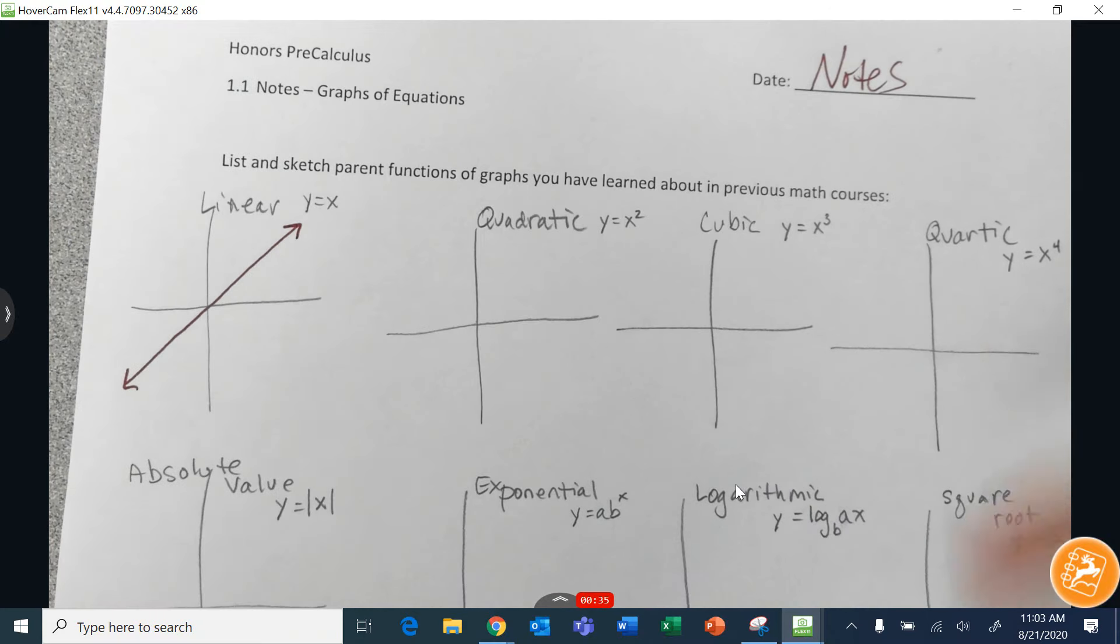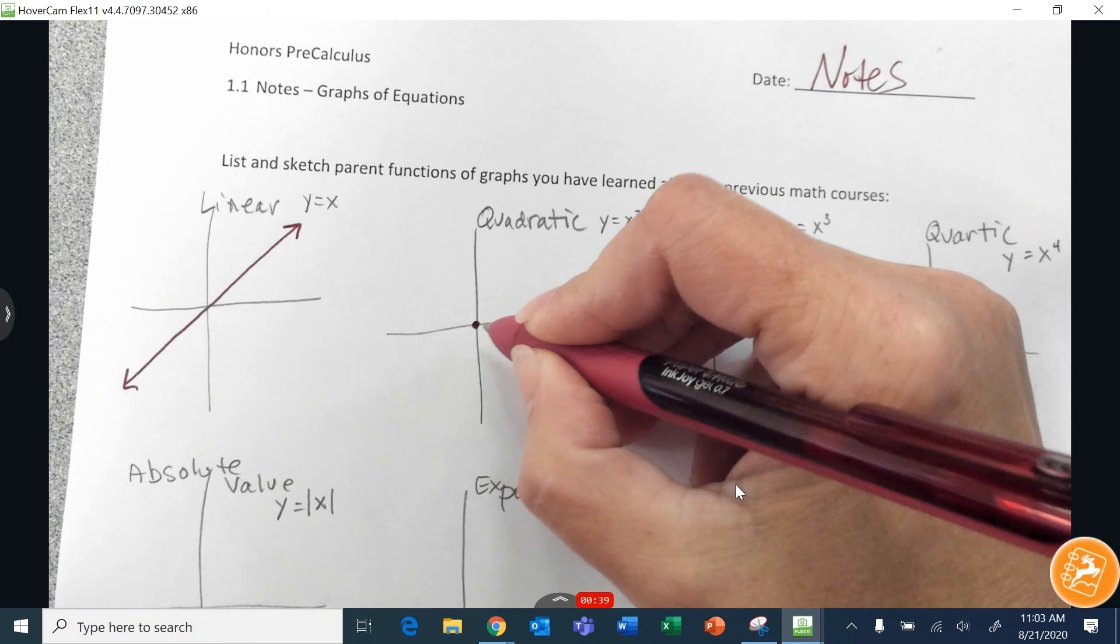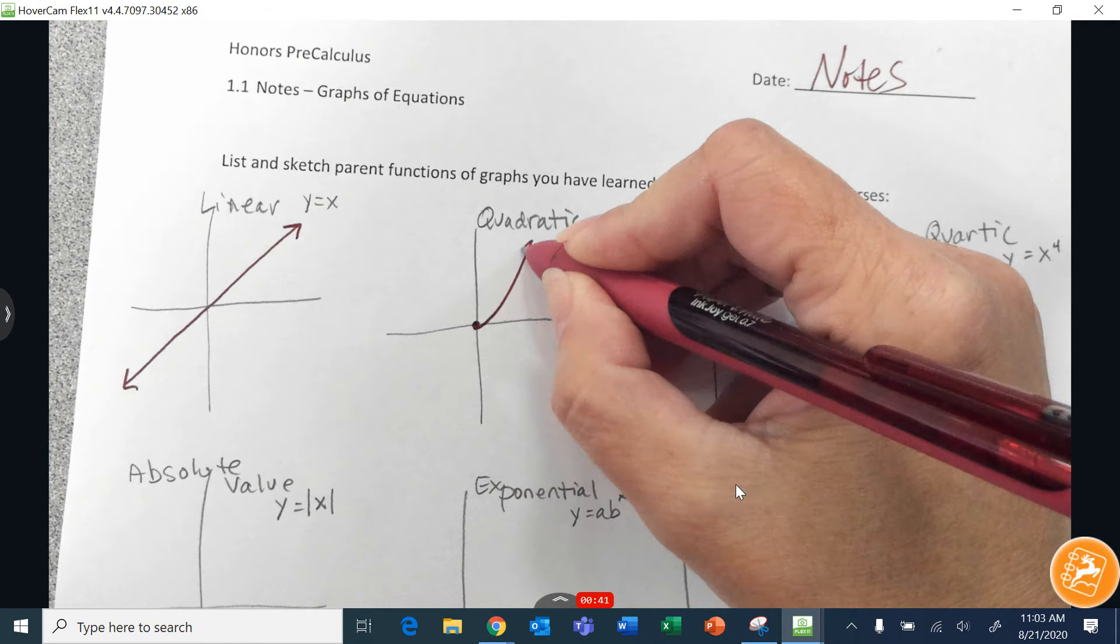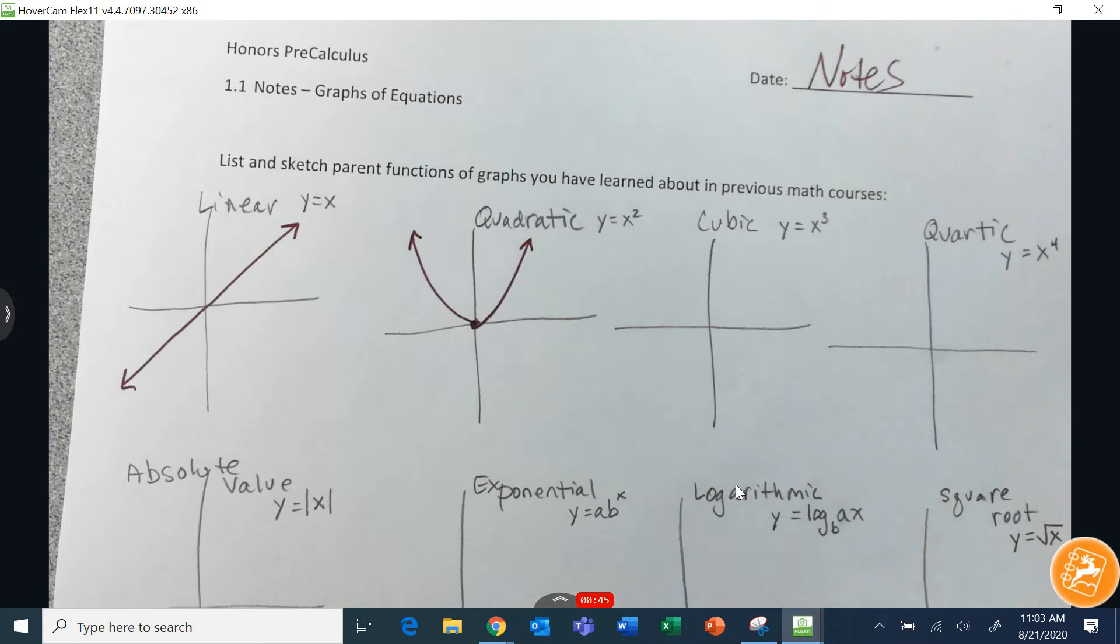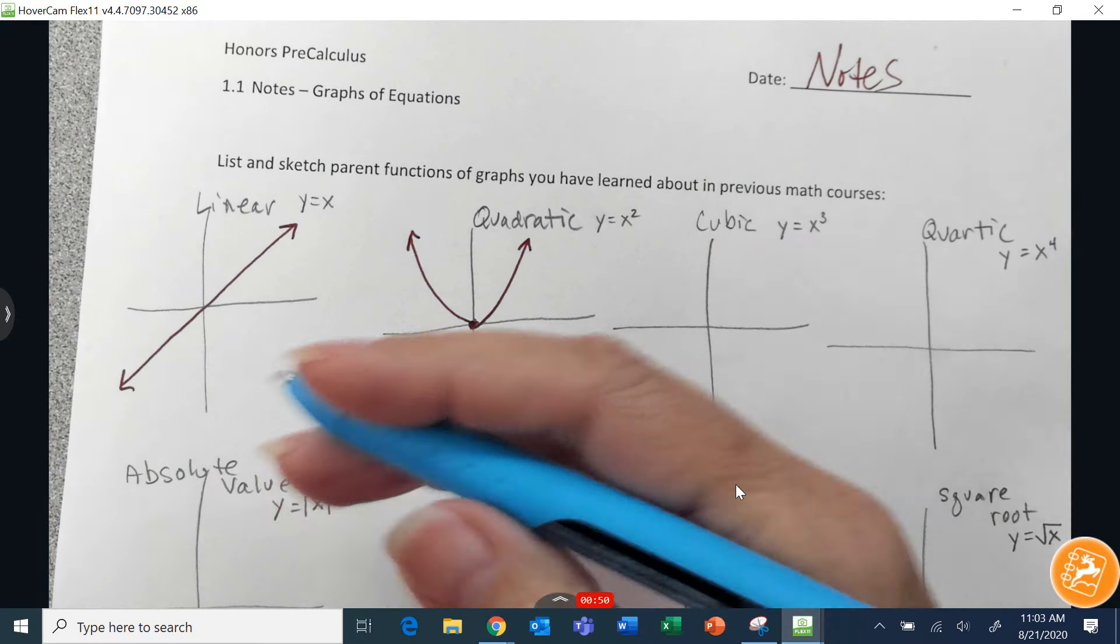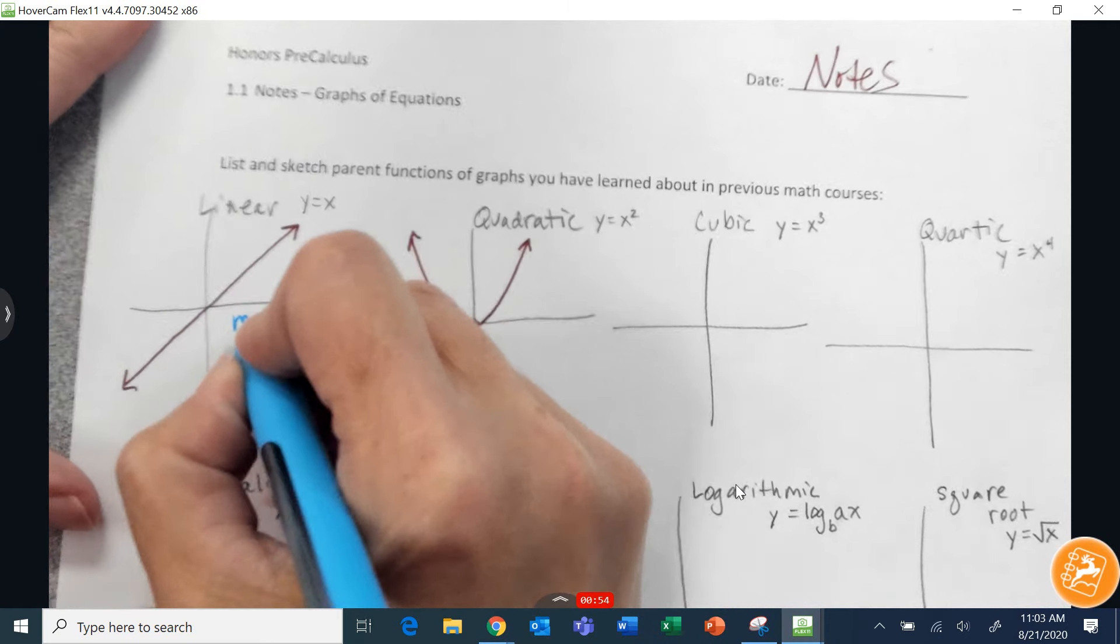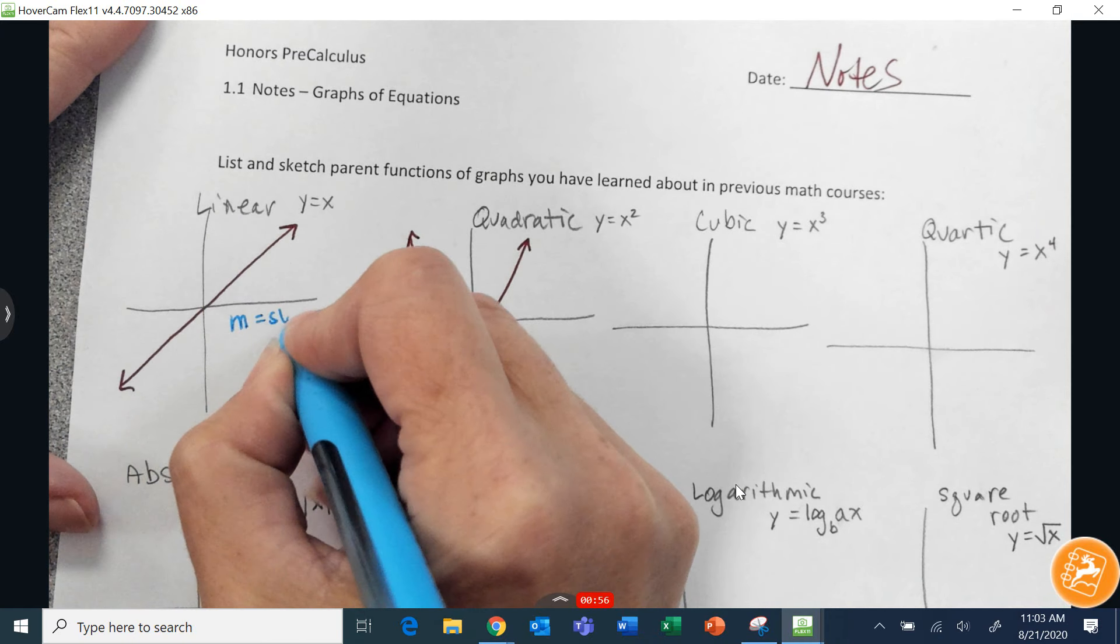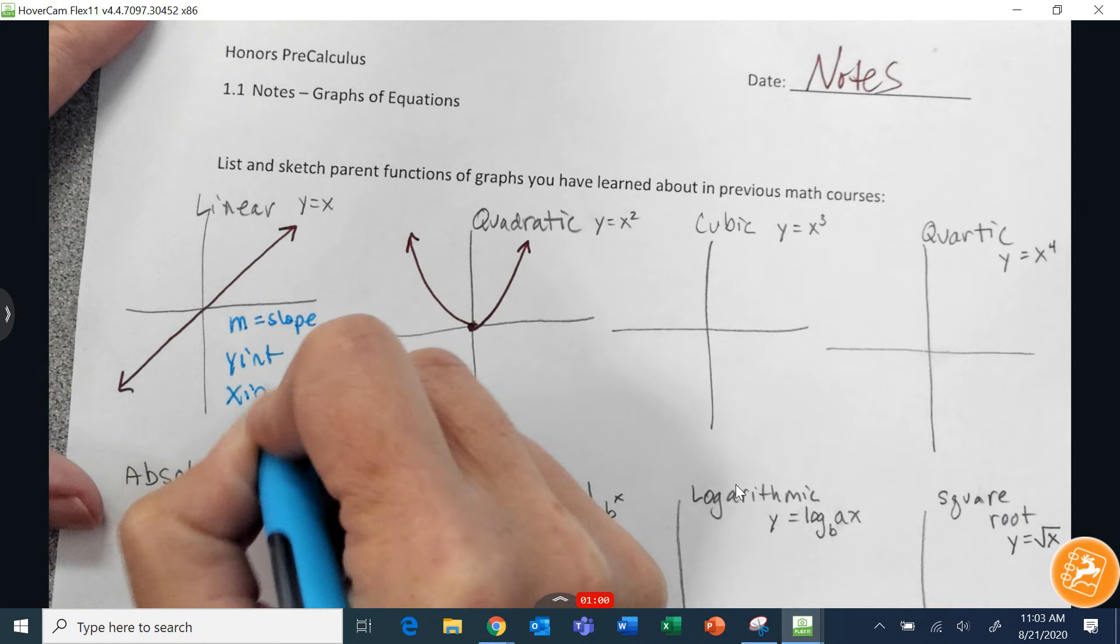Quadratic, we've got y equals x squared, and that is a parabola. When we talk about things like lines or parabolas, there are certain things that we always use to graph these. Like with lines, we would use the slope, the y-intercept, and the x-intercept.